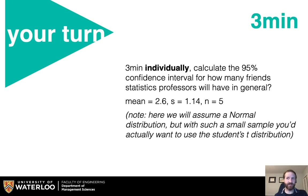So now it's your turn again. Calculate the 95% confidence interval for how many friends statistics professors will have in general. We have the mean, 2.6. We have the standard deviation, 1.14, and our n is 5.